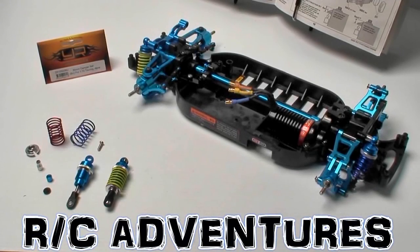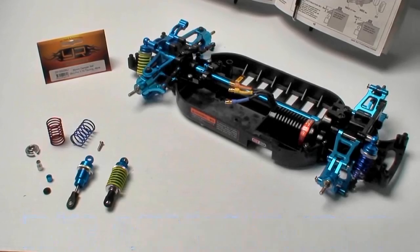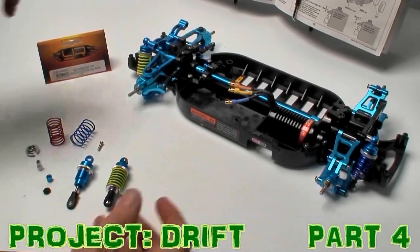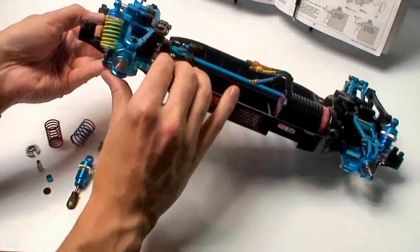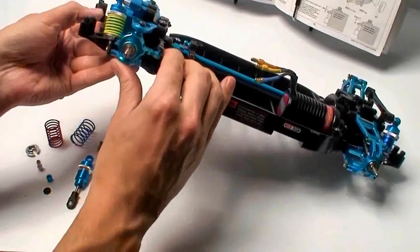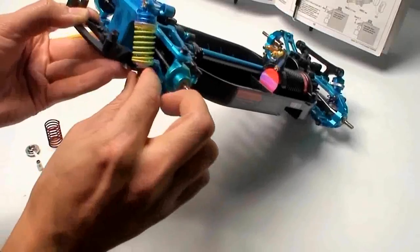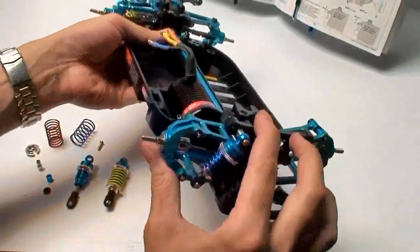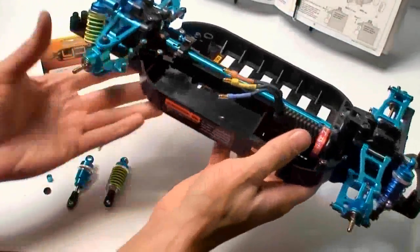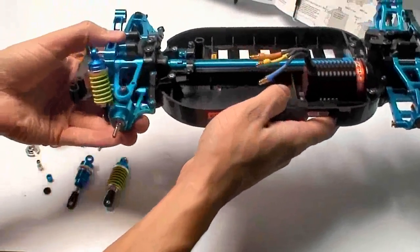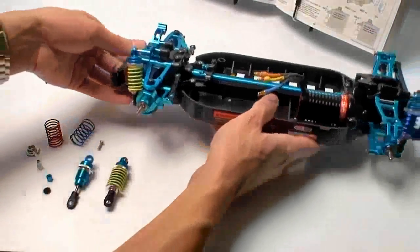All right, moving on to one of my favorite parts of any build: the dampers or shock set. As you can see here, I've jumped ahead a little bit. I'm actually on about step number 23 where I've already installed the dampers. You can see on the front and on the back I've decided to go with a stiffer suspension in the rear of the vehicle and about a midline suspension up front.